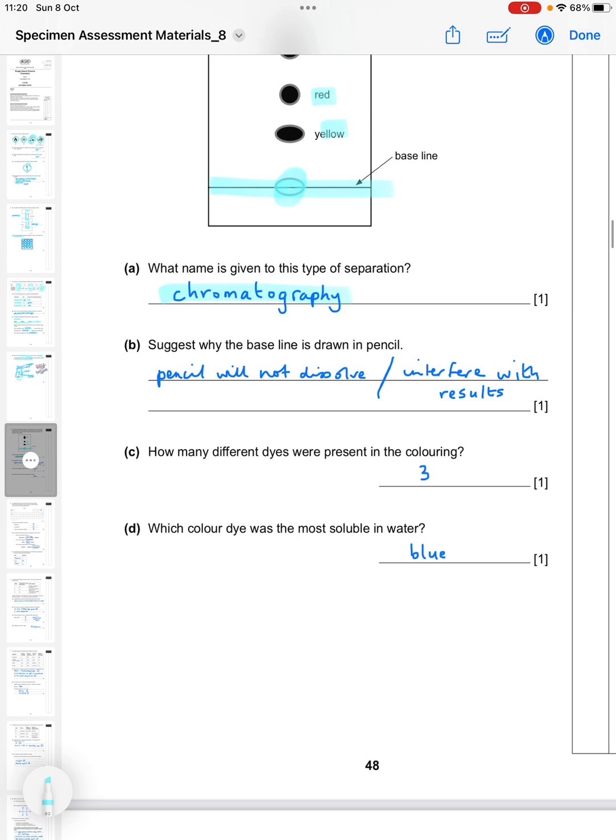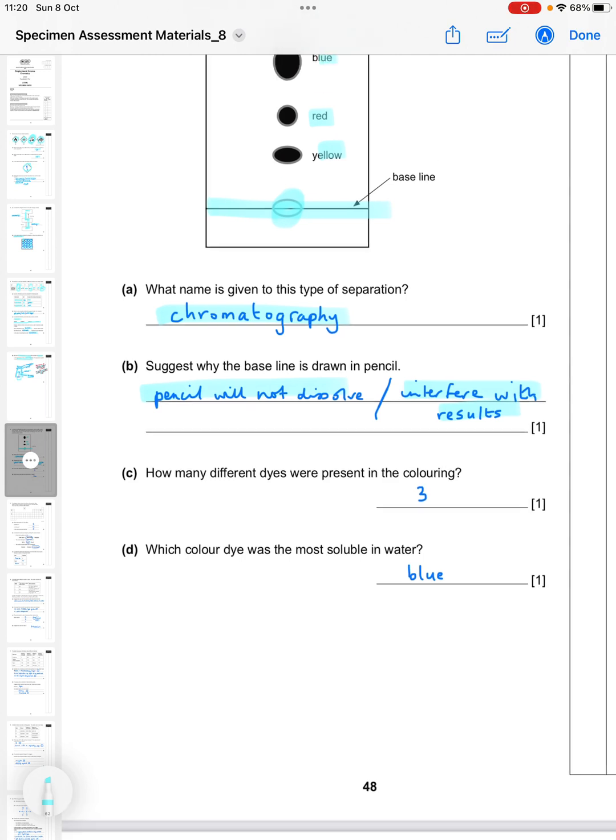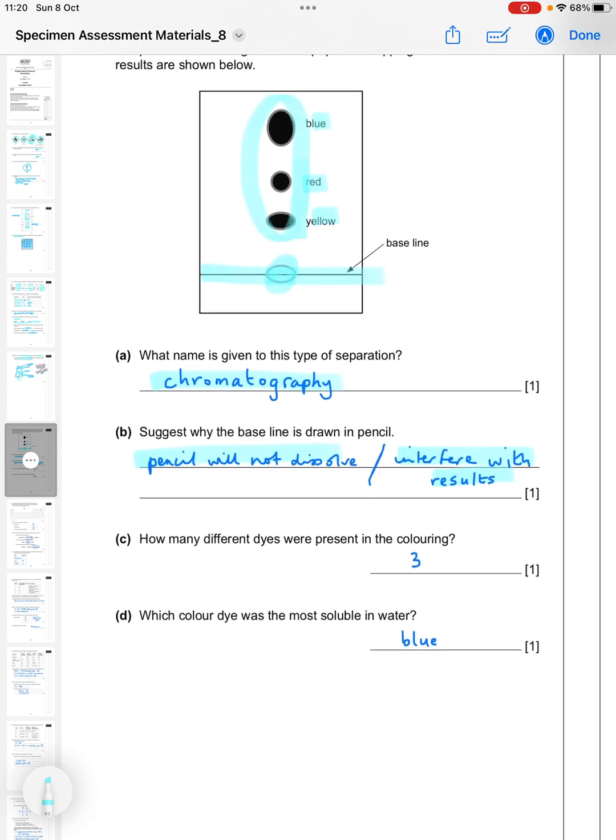How many different dyes were present in the coloring? You're looking for the total number of spots which is three. Which dye was the most soluble? It's the one that travels the furthest away which was blue.